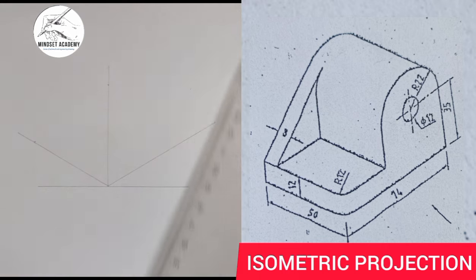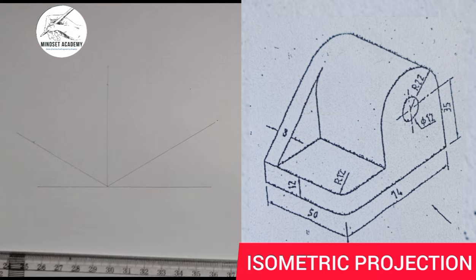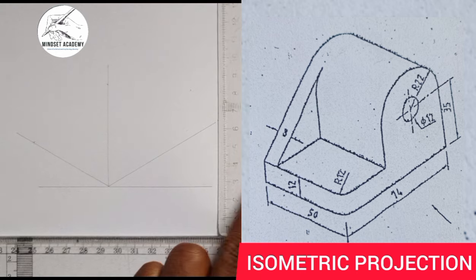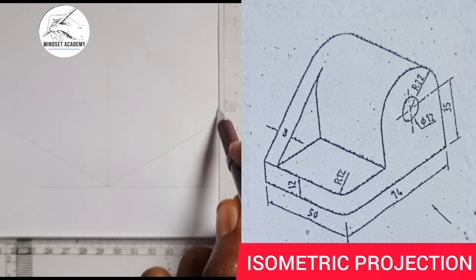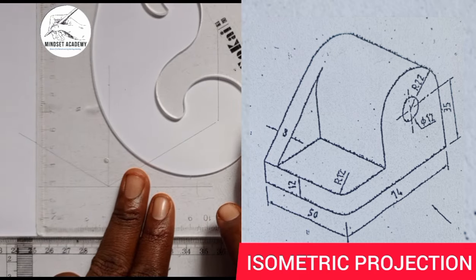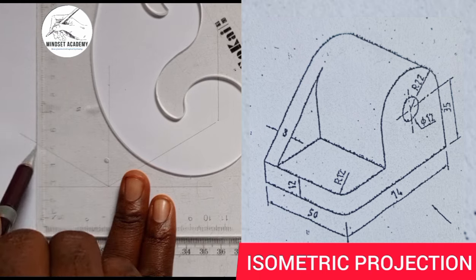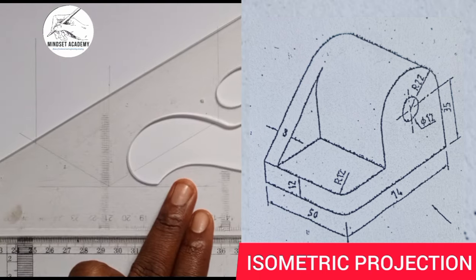Now I will use those measurements to form a box. In doing that, I will take my instrument and generate these points upward this way, then come in two and generate upward this way, and close it up.